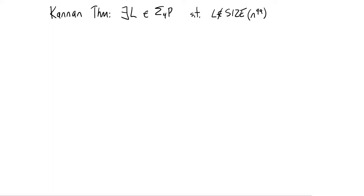Such that L does not have a fixed polynomial size circuit, circuits of size n to the 99, and 99 was just a large fixed constant I picked for fun. You can do it for any constant.